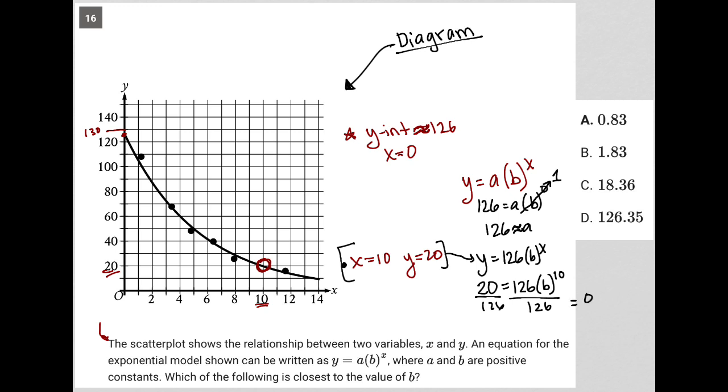So I have 0.158 equals b to the 10th power. I'm going to do a 10th root for both of these in Desmos. So I know that's going to just become b.